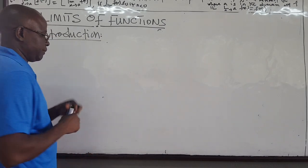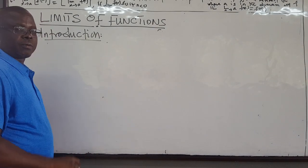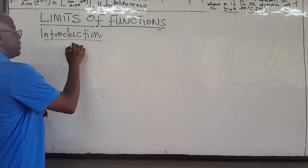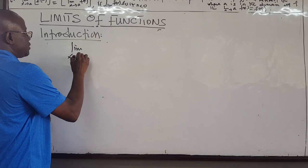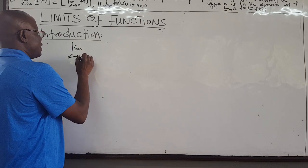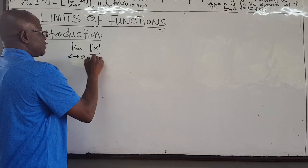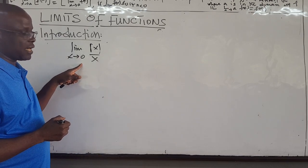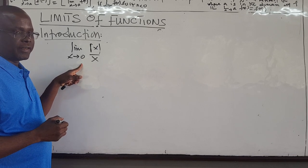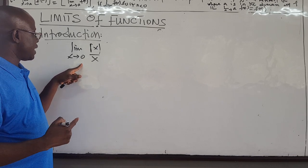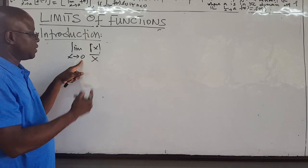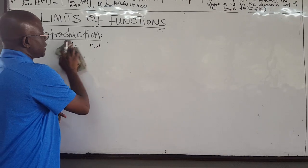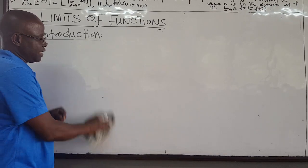Hello everyone. We are going to continue from where we left off. In the last lecture we showed that the limit as x approaches 0 of |x|/x does not exist, because the limit from the left hand side is negative 1 and the limit from the right hand side is positive 1. So we used the left hand and the right hand limit to show that it does not exist.